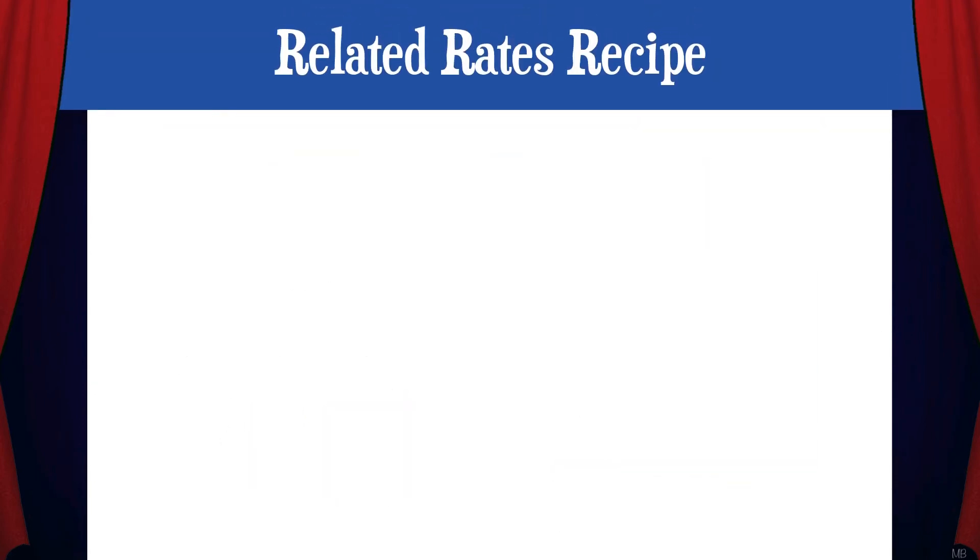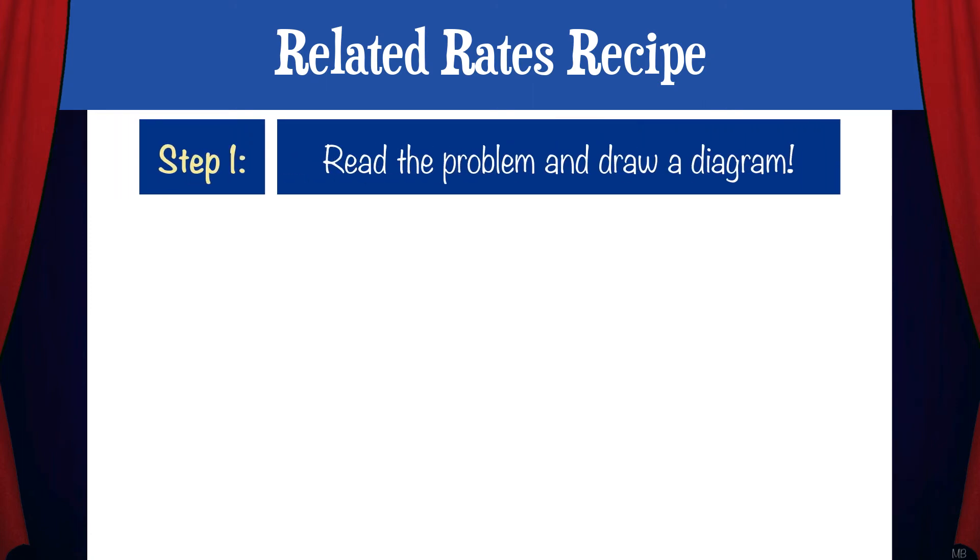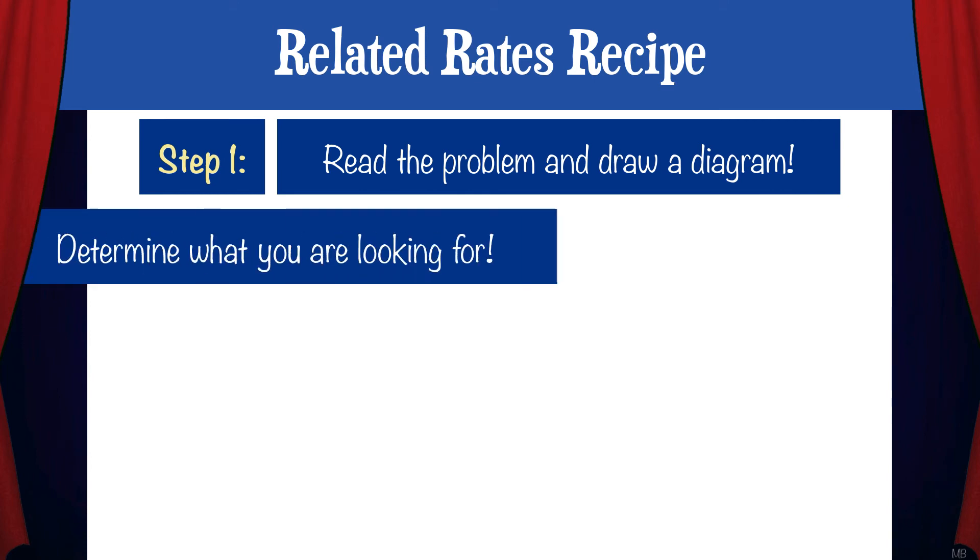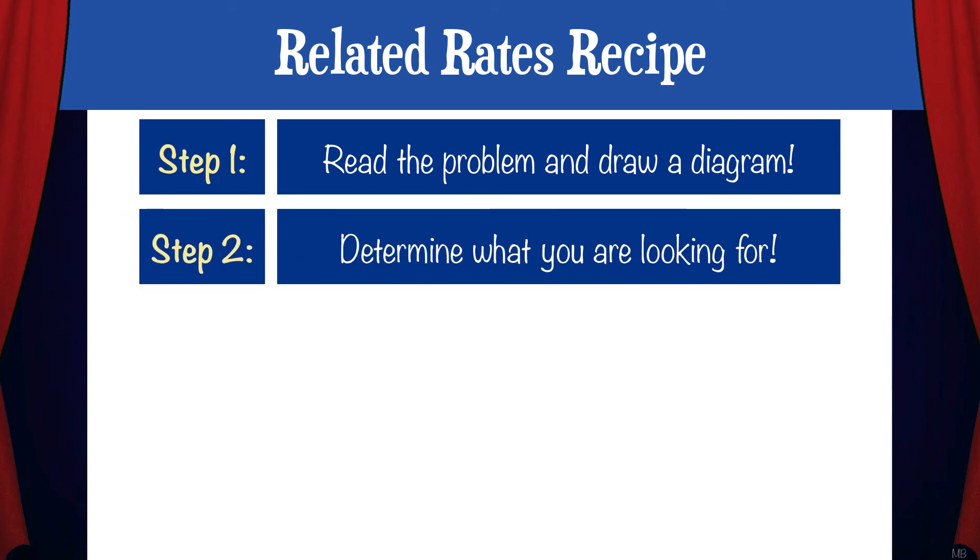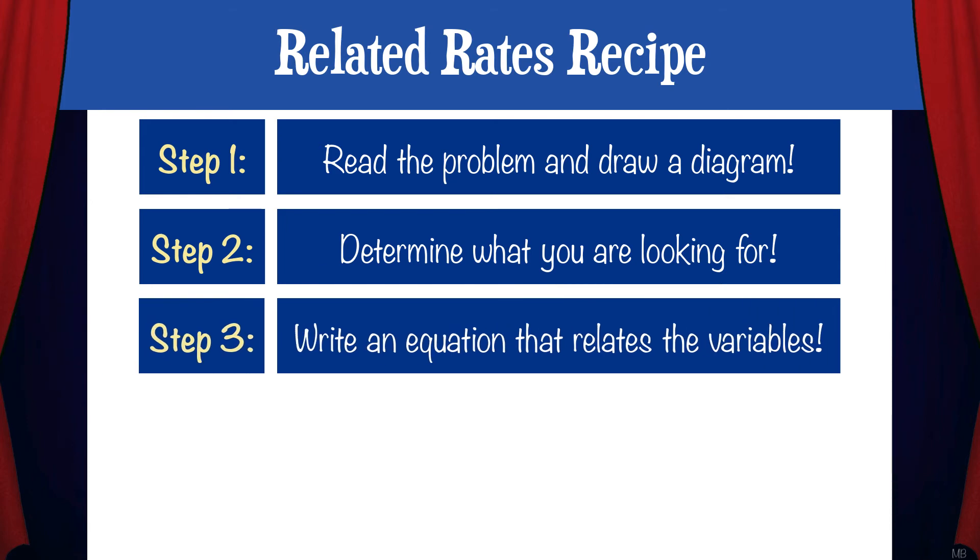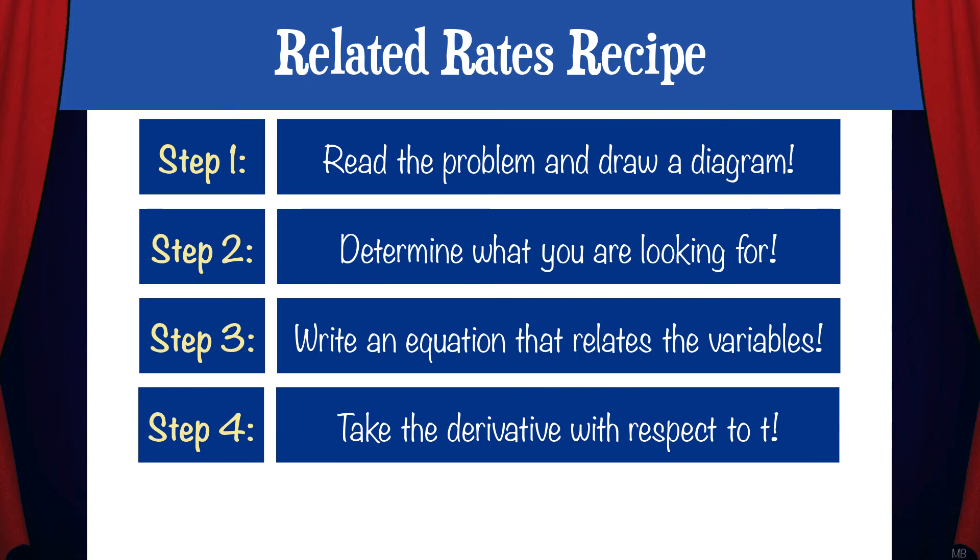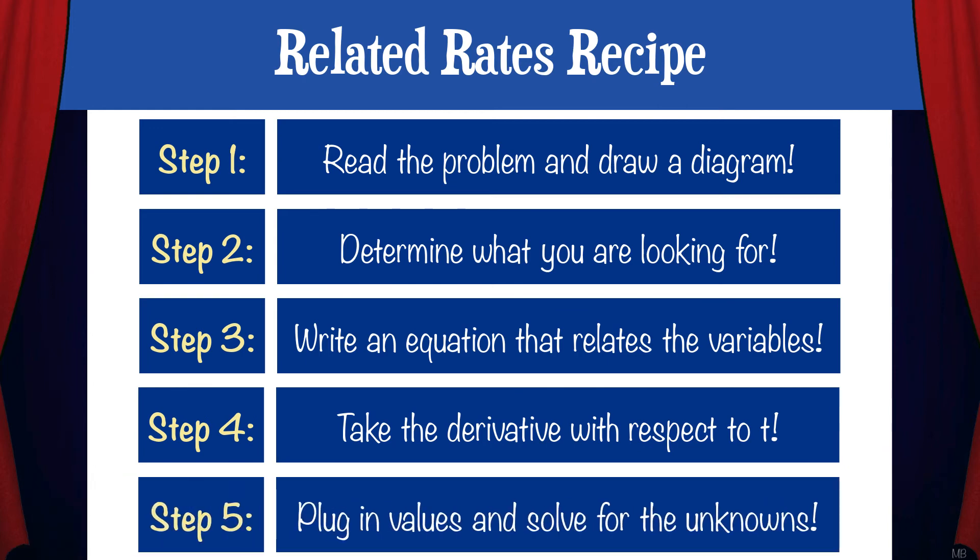We can generalize from this example problem and create a general related rates recipe. Step one, read the problem and draw a diagram. Step two, determine what you are looking for. Step three, write an equation that relates the variables. Step four, take the derivative with respect to t. Step five, plug in values and solve for the unknowns.